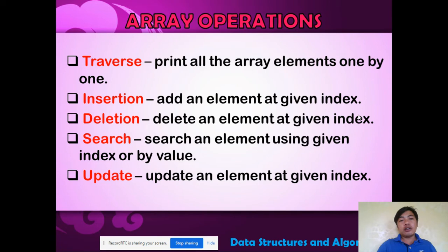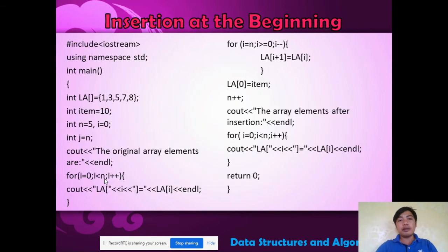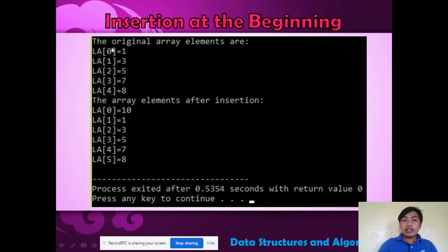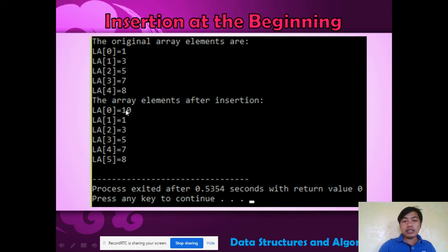What are the operations in an array? We can traverse, insert, delete, search, and update. For example, insertion at the beginning: here is your array. Because we are inserting an element at the beginning, we insert 10 at the front. So the original array was 1, 3, 5, 7, 8, and now the new element 10 is at the beginning.